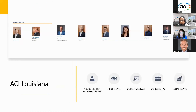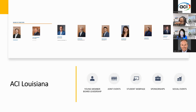ACI Louisiana has really made young member outreach a priority. Rather than establishing a separate young member committee, they are strategic about appointing younger members to be chapter leaders. About 80 to 90% of their leaders — president, vice president, secretary, treasurer, and directors — are individuals under the age of 35. They've had several presidents who were 30 years old.